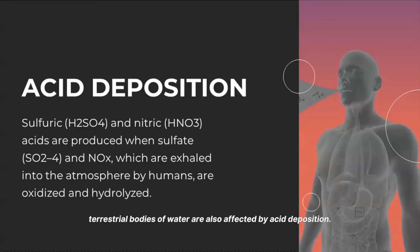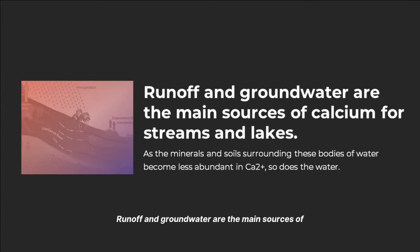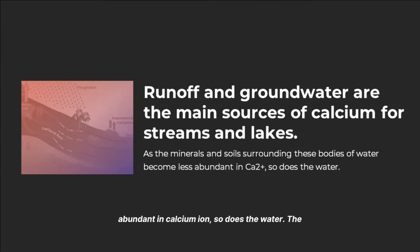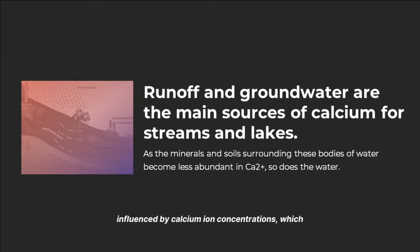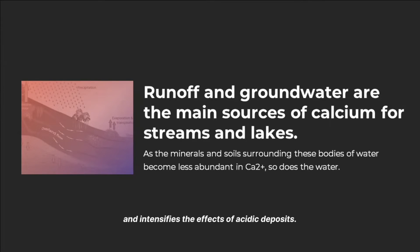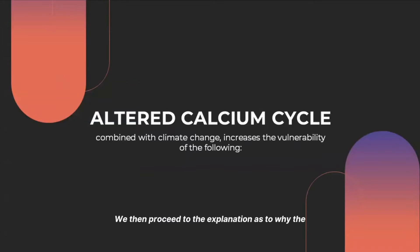Moreover, terrestrial bodies of water are also affected by acid deposition. Runoff and groundwater are the main sources of calcium for streams and lakes. As the minerals in soils surrounding these bodies of water become less abundant in calcium ions, so does the water. The acid neutralizing capacity, or ANC, of fluids is influenced by calcium ion concentrations, which causes pH oscillations with changes in proton fluxes and intensifies the effects of acidic deposits.